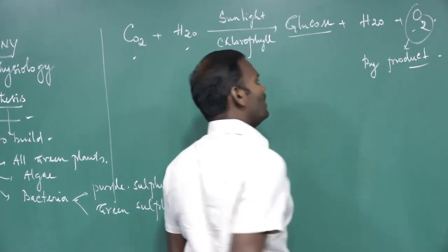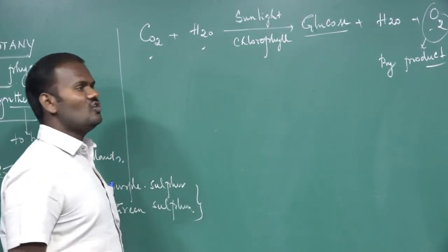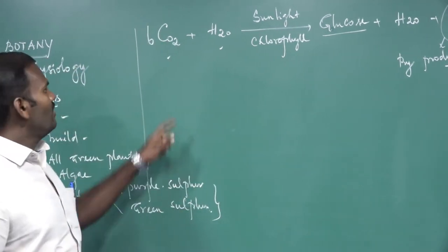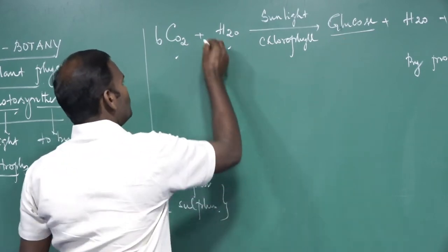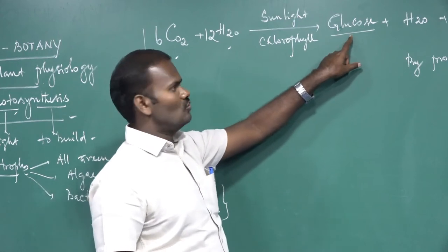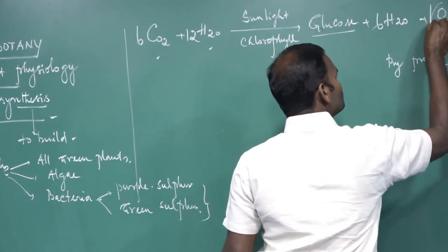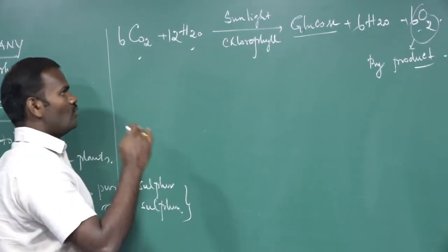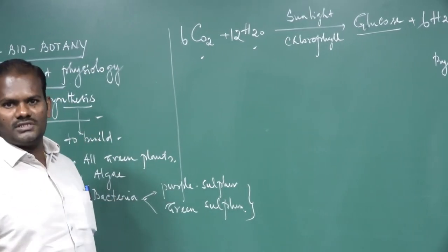The byproduct released during photosynthesis is oxygen. If we balance the equation: six molecules of carbon dioxide are essential for the production of one molecule of glucose, twelve molecules of water are essential, six molecules of oxygen are released, and six molecules of water are also released. These are the overall equations of photosynthesis.